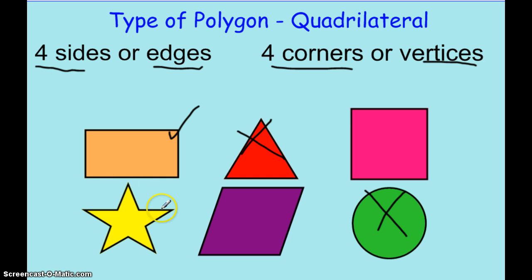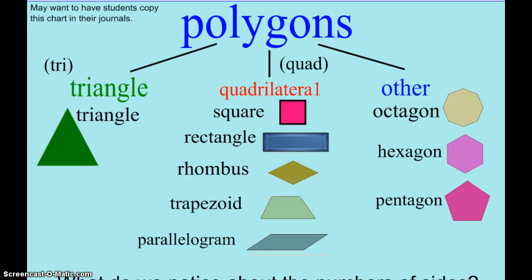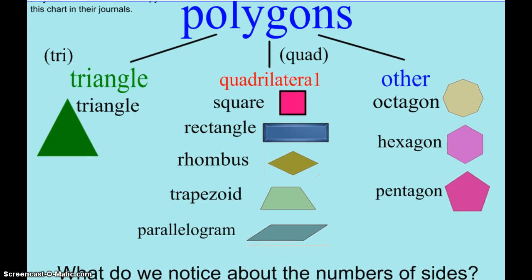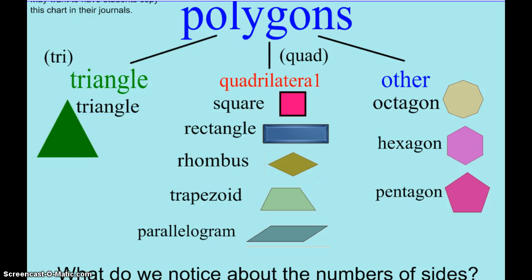And this star has way too many corners to count as a quadrilateral. So this chart is kind of a little hierarchy of polygons. The overall term is a polygon, any closed shape with straight sides.